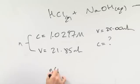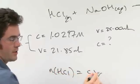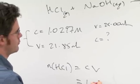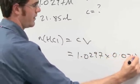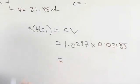The number of moles of HCl equals concentration times by volume. Concentration is 1.0297. The volume is 0.02185. What's that give you?